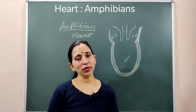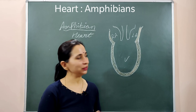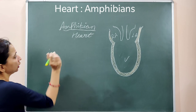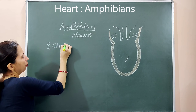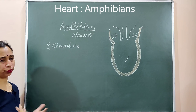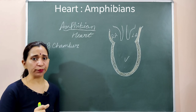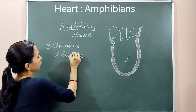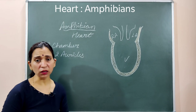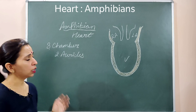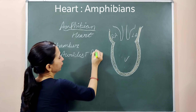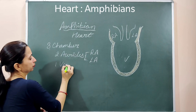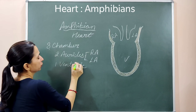Now we will discuss about the amphibian heart. In the case of amphibians, the heart is a three-chambered heart. Out of these three chambers, two are atria — the right atrium and the left atrium — which are divided by an auricular septum. They have one ventricle, making a total of three chambers.